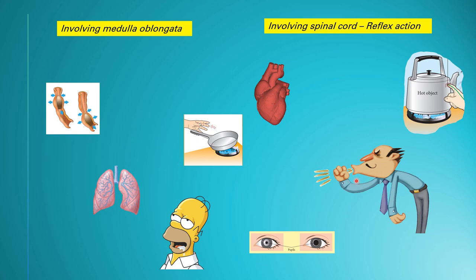Number seven is coughing or sneezing — maybe something has entered your nose or throat, so you cough or sneeze it out. Number eight is a person touching a hot object or kettle accidentally. You can pause the video now and try to draw lines showing which of the eight examples involve the medulla oblongata and which are reflex actions.